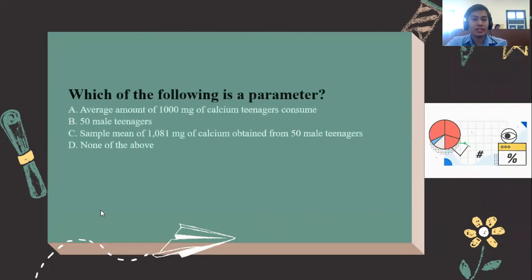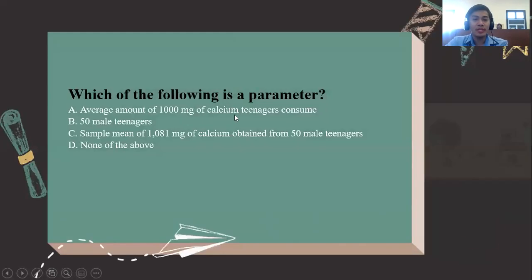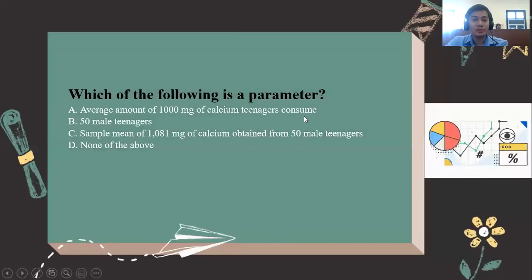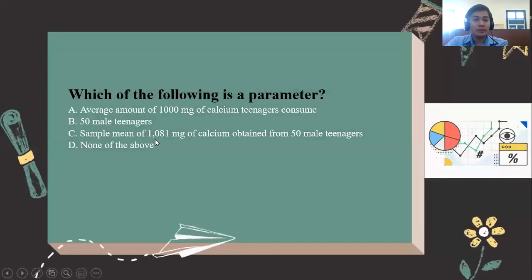Let's have a short activity. Which of the following is a parameter? A: average amount of 1000 mg of calcium teenagers consumed. B: 50 male teenagers. C: sample mean of 1081 mg of calcium obtained from 50 male teenagers. Or D: none of the above.